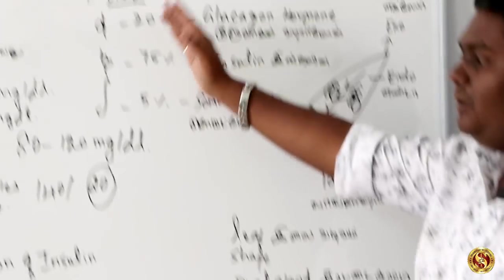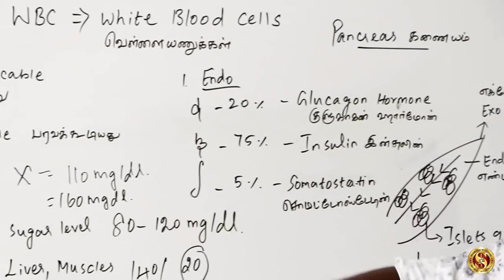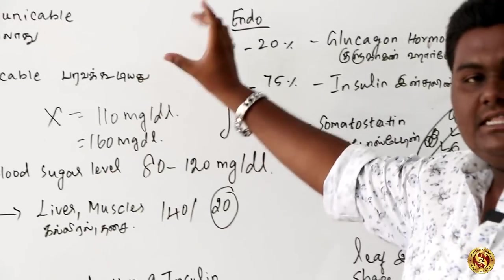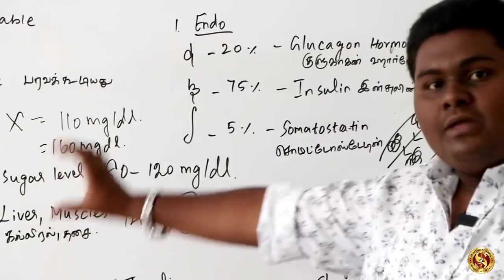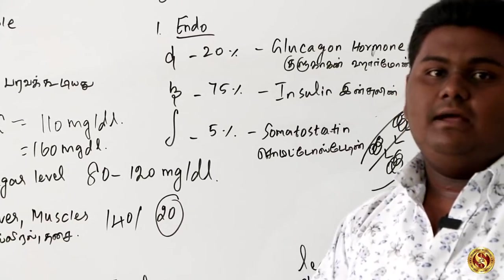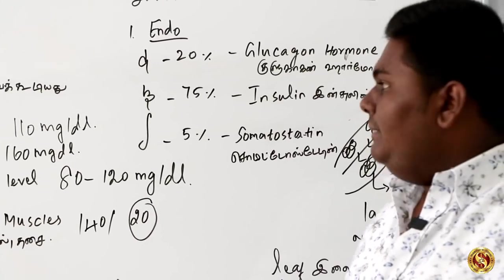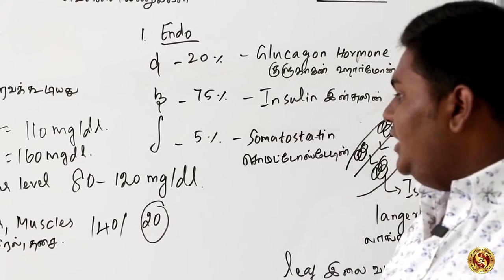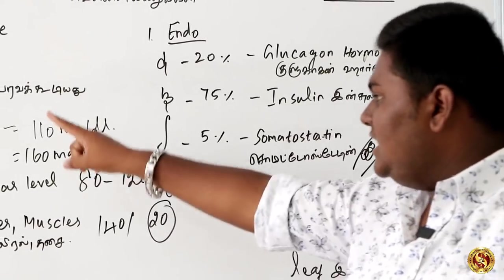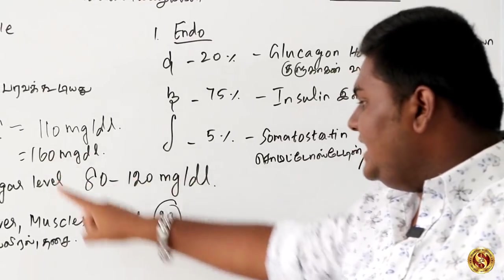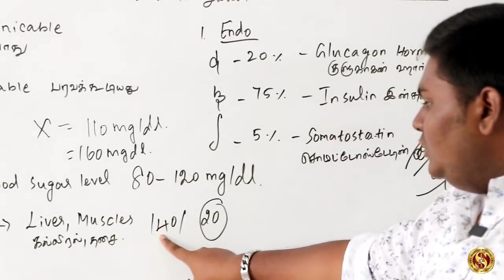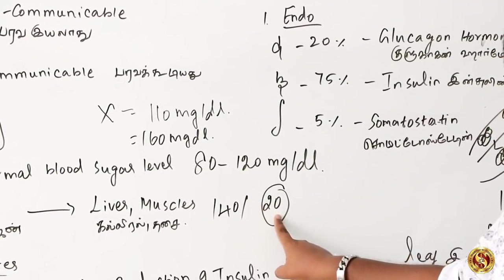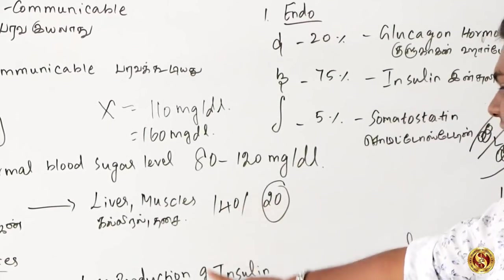The Endo and Exo functions are related to enzymes. This connects to diabetes. If the pancreas cannot convert carbohydrates properly, blood sugar rises and this leads to diabetes.